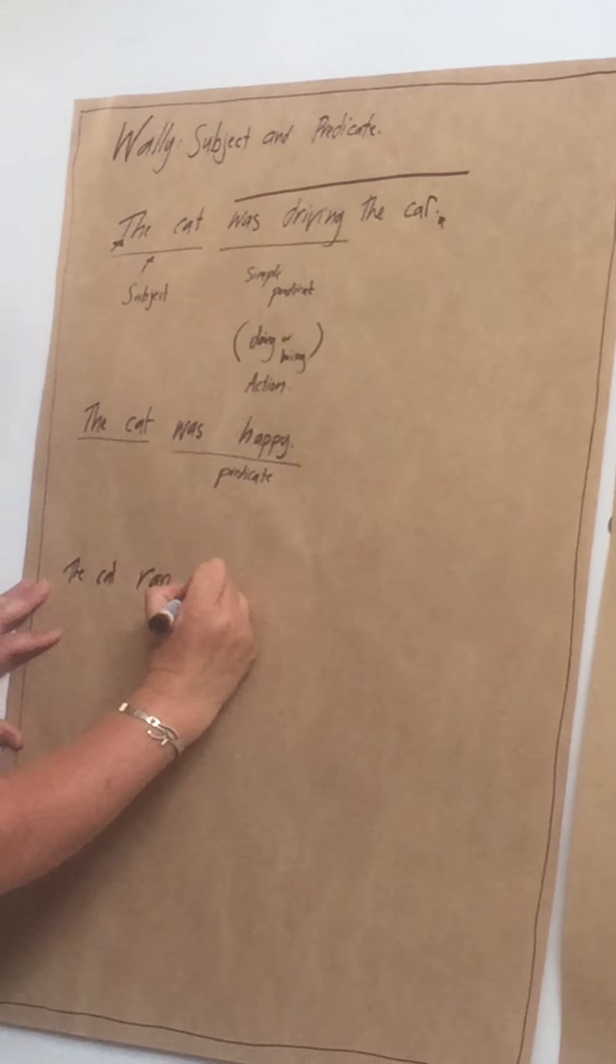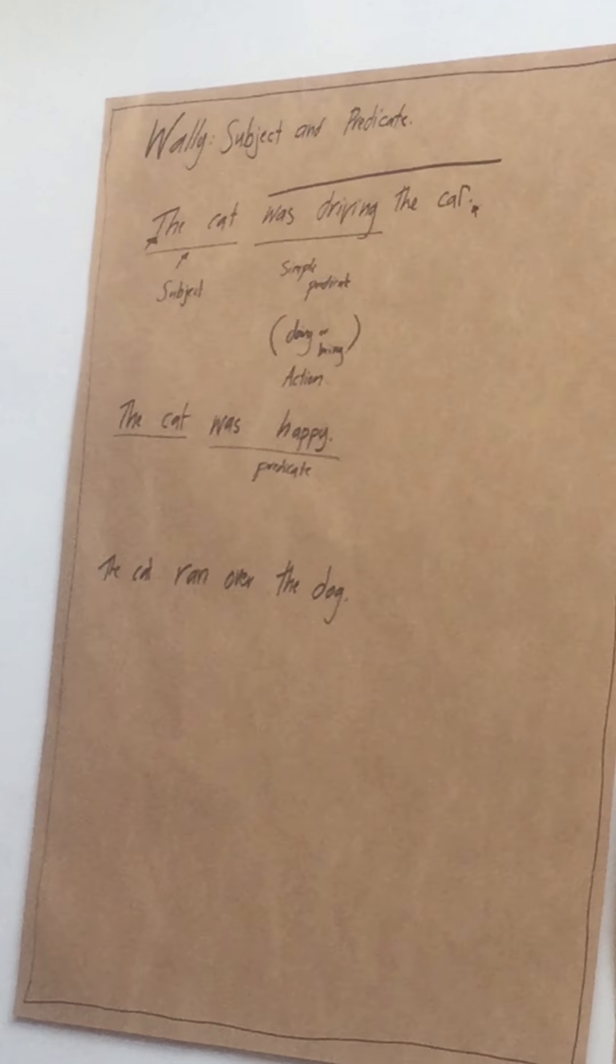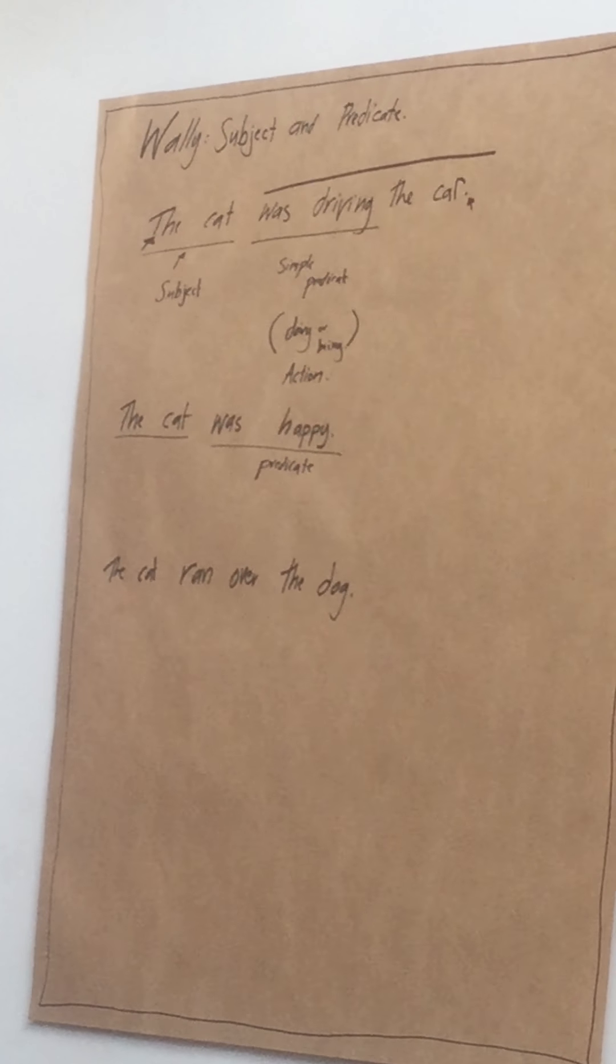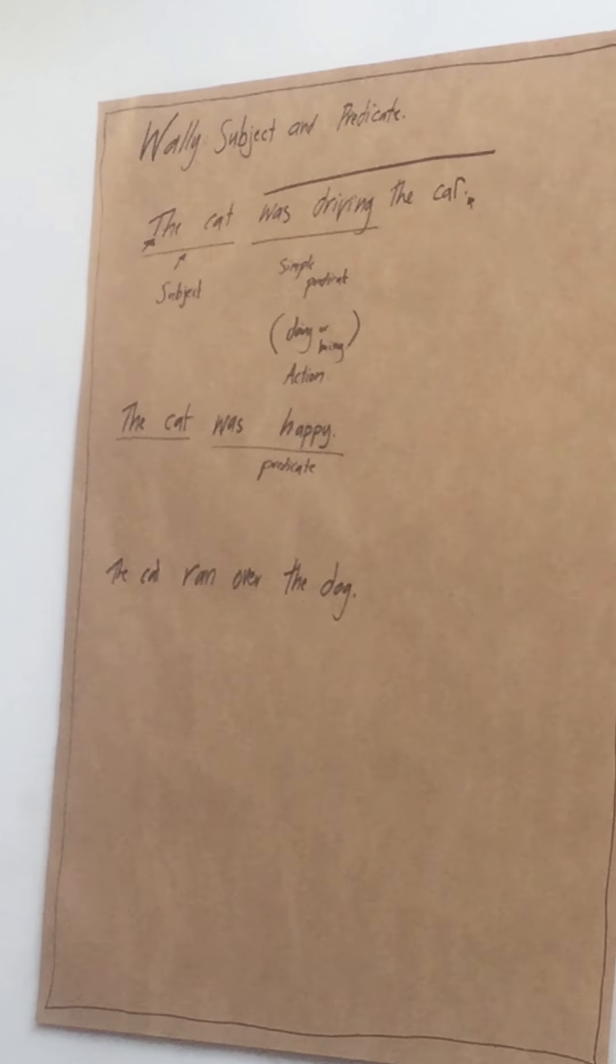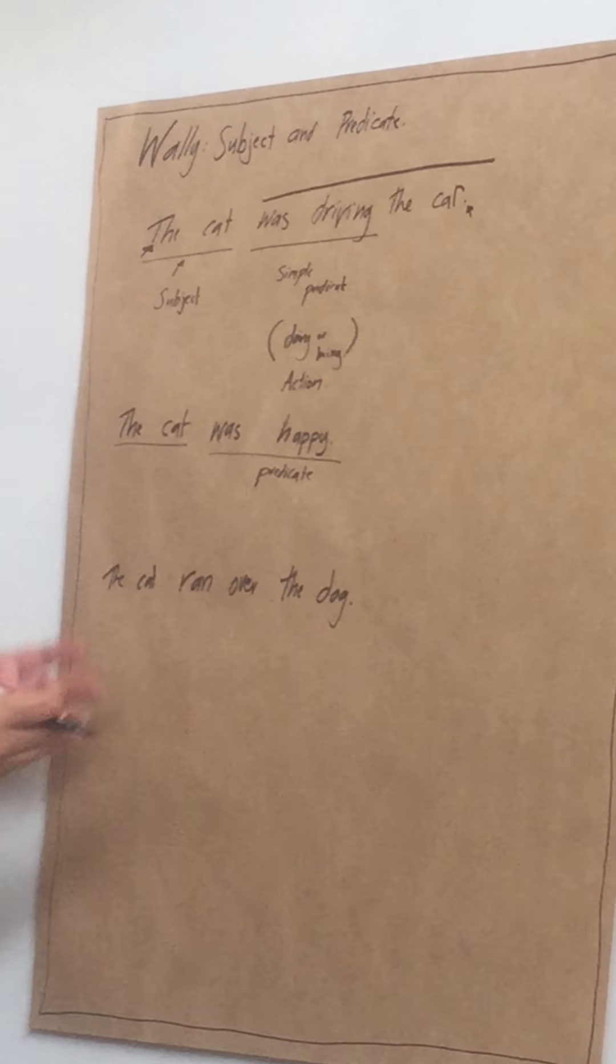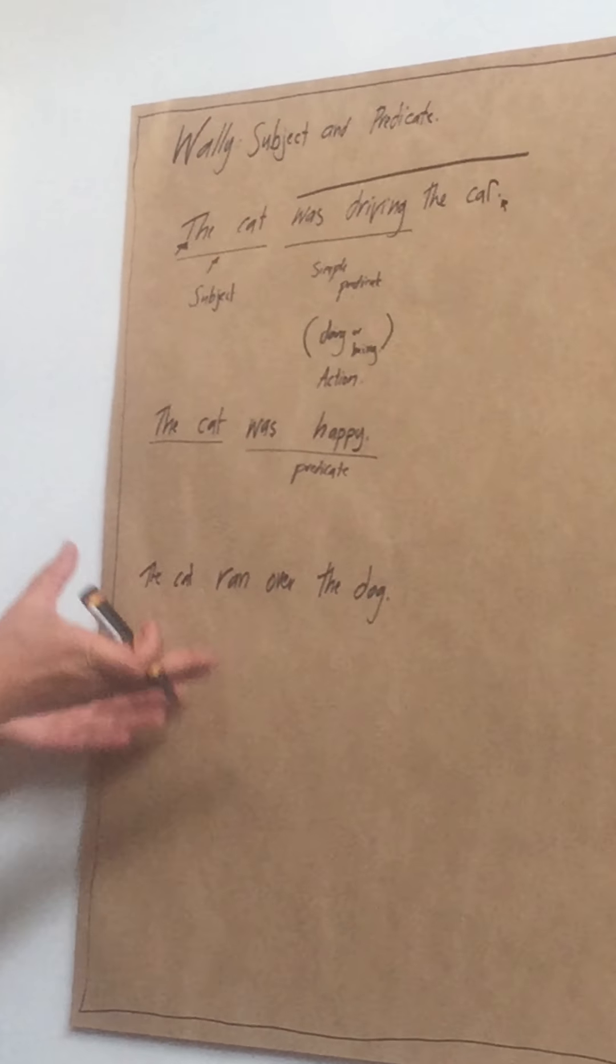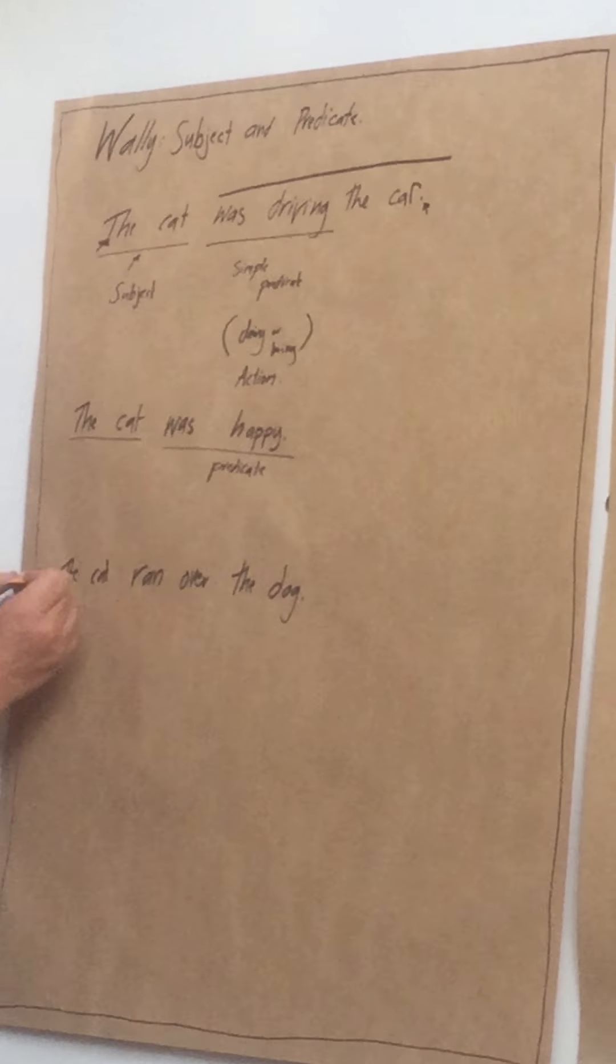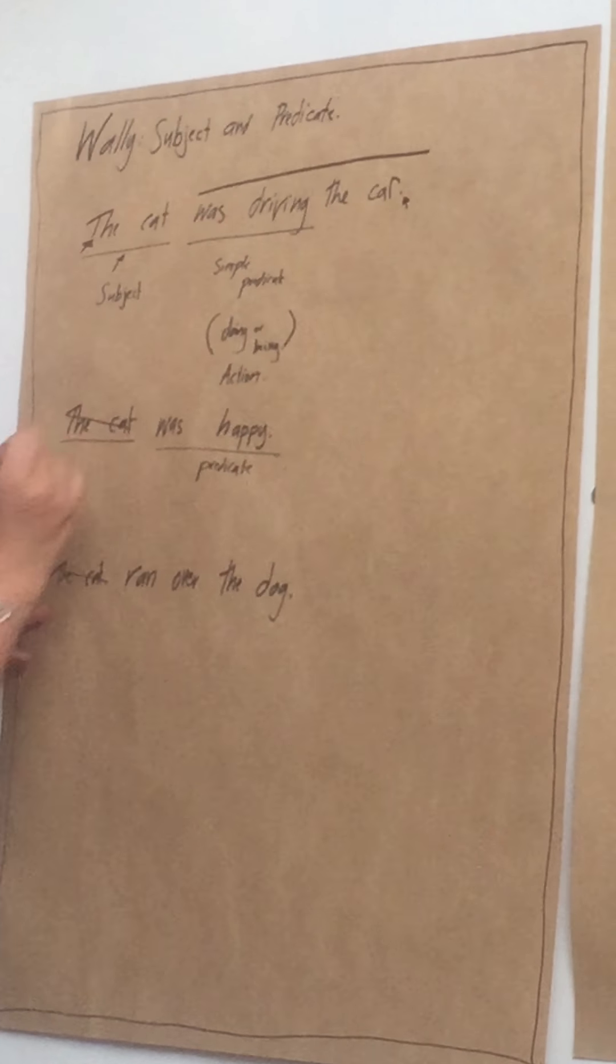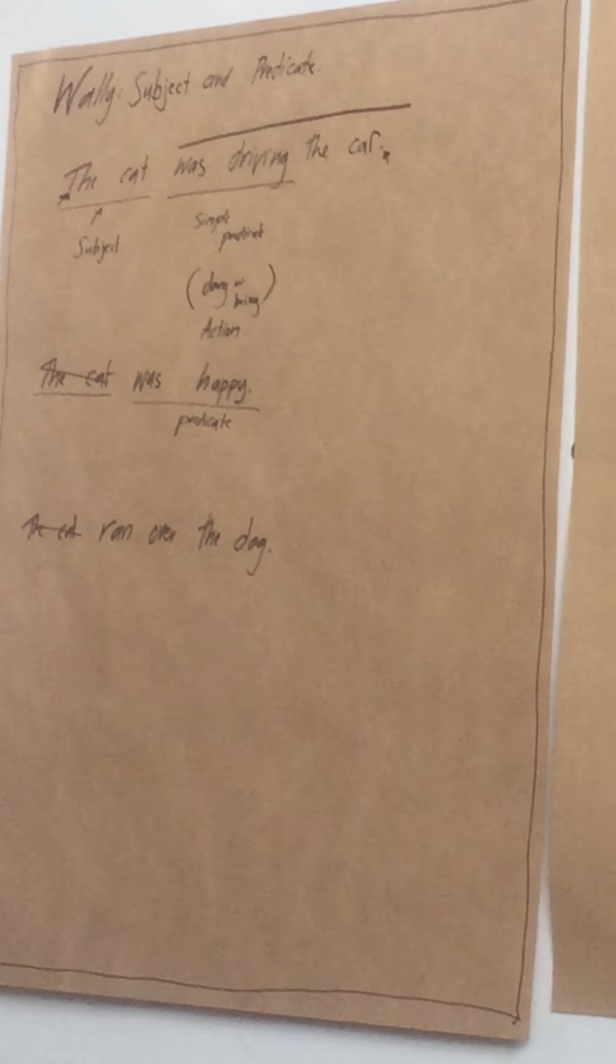The cat was driving the car. So your main idea here is that there's an animal and it's in a car. At primary school you just had to have an idea and it had to be doing something and it needed a capital letter and it needed a full stop.